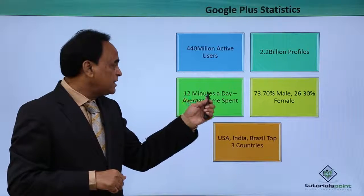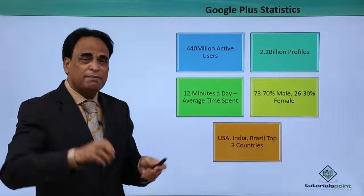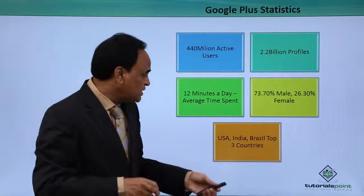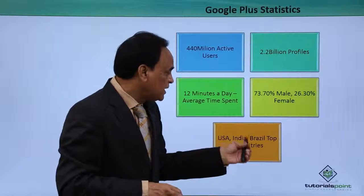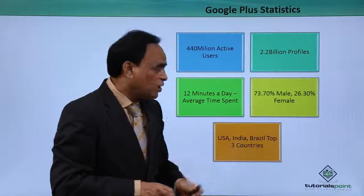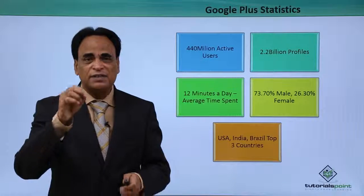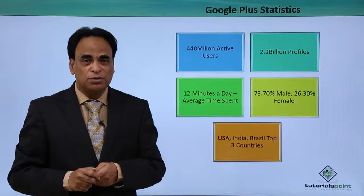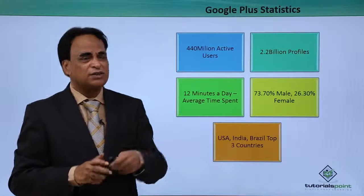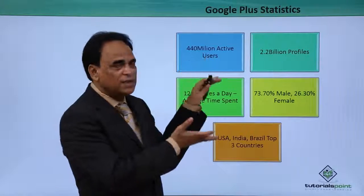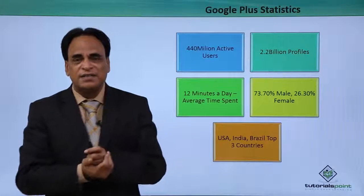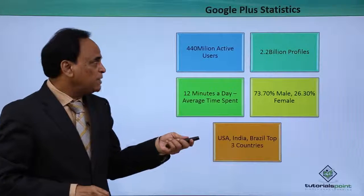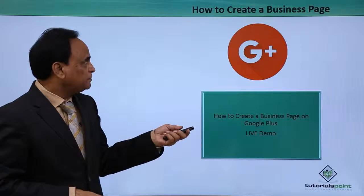73.70% male and 26.30% female on Google Place. 12 minutes a day is the average time spent by users. USA, India, and Brazil are the top 3 countries as far as Google Place users are concerned. These are some of the statistics available for us.